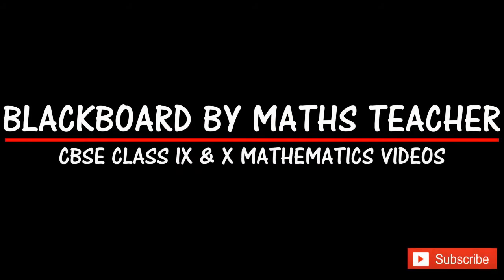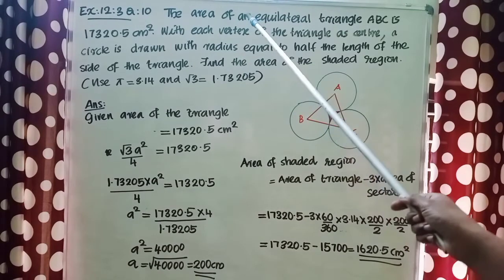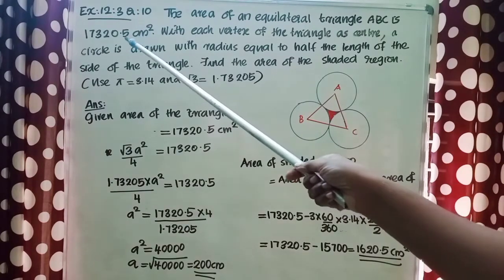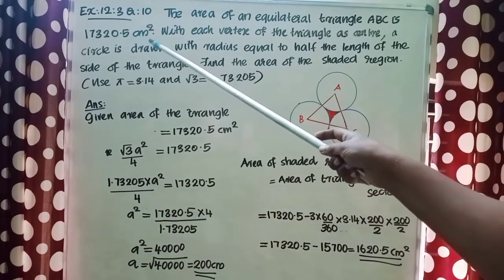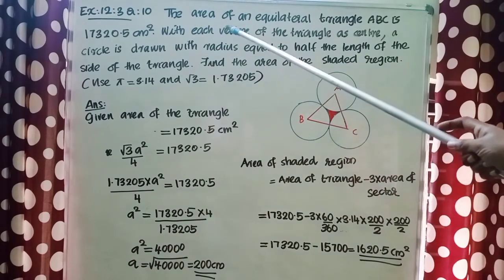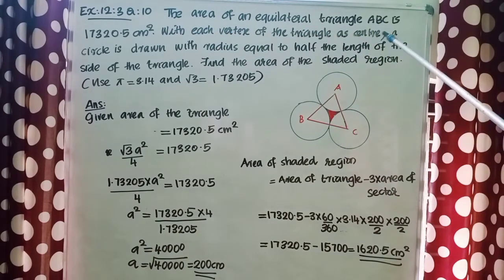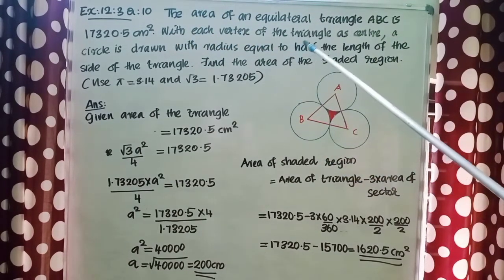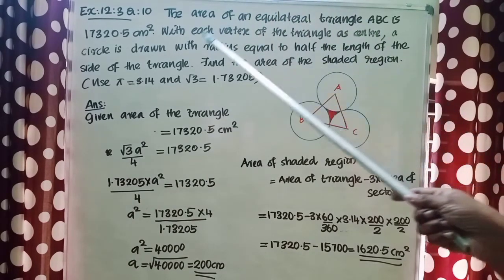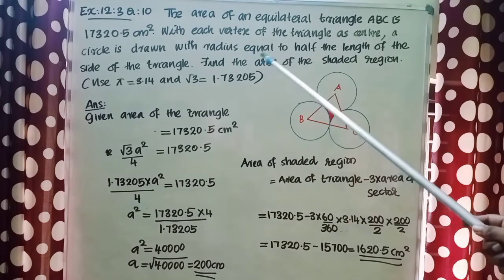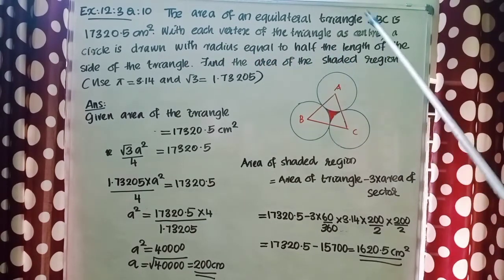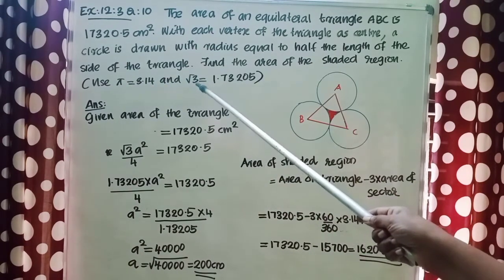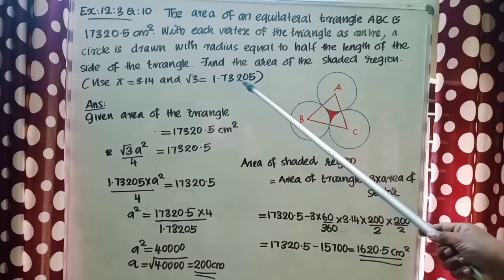Dear students, welcome to Blackboard. The area of an equilateral triangle ABC is 17,320.5 cm². With each vertex of the triangle as center, a circle is drawn with radius equal to half the length of the side of the triangle. Find the area of the shaded region. Use pi equal to 3.14 and root 3 equal to 1.73205.